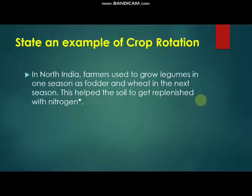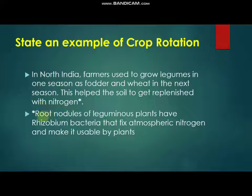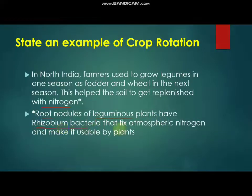A common example of crop rotation in North India is that farmers grow leguminous crops in one season and wheat in the next season. This helps the soil to get replenished with nitrogen. The root nodules of leguminous plants contain rhizobium bacteria that fix atmospheric nitrogen and make it usable by plants.